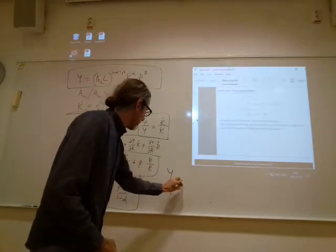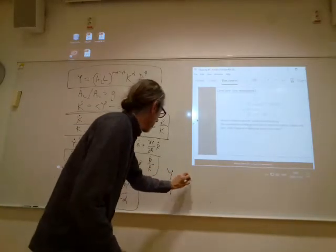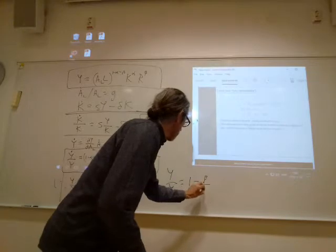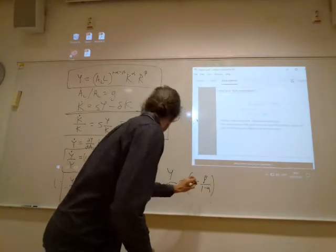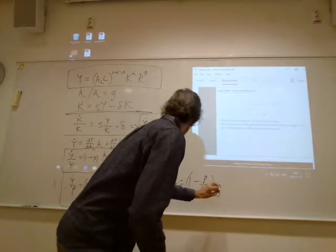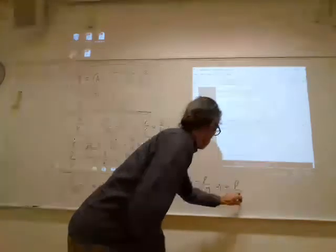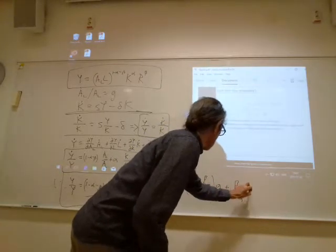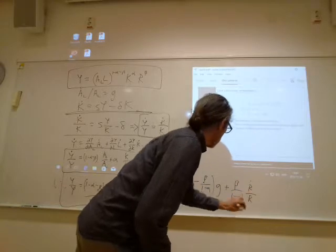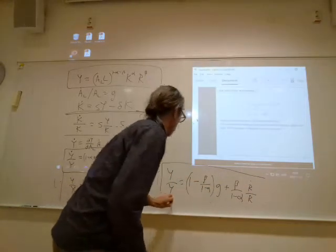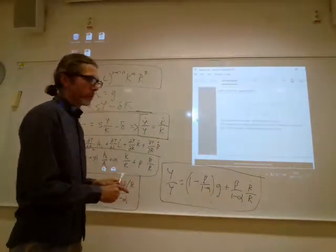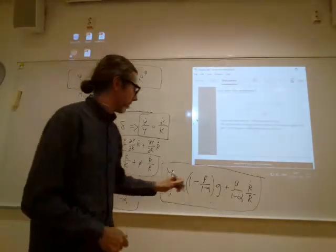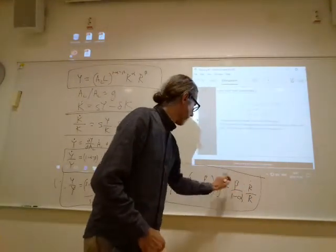So, this applies on the balanced growth path. Y dot over Y is 1 minus beta over 1 minus alpha Y dot over G plus beta over 1 minus alpha R dot over R. Oh, but wait, this was land. What do we know about R dot over R? It's 0, so that goes out.